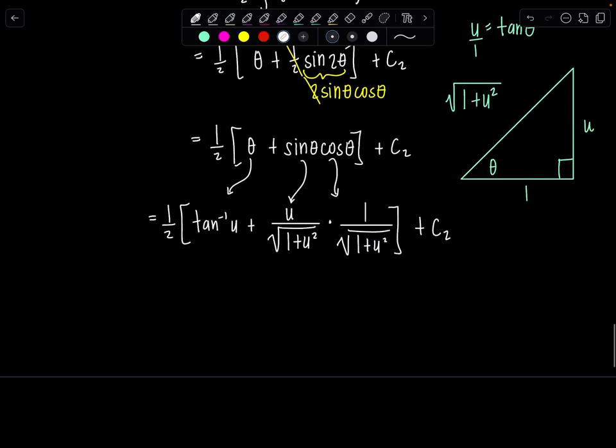Okay, and then this cleans up nicely. So this is one half tan inverse of u plus u over two times one plus u squared plus c2. Okay, that was a little more work than the first one.